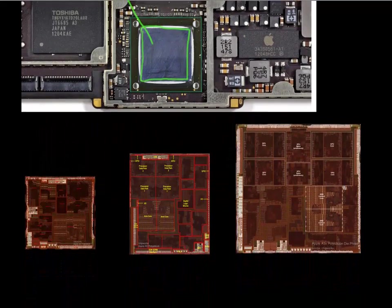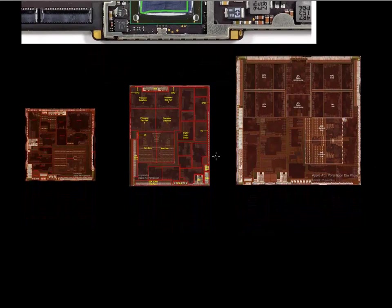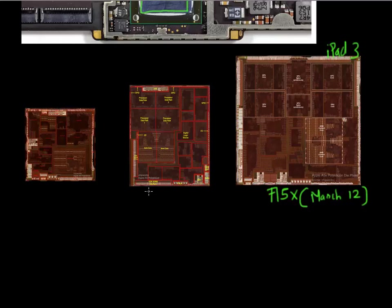And so if you take that apart and you flip the chip again, you see shown here is essentially the chip as it looks. This is the A5X chip, which was launched in March 2012 along with the product, the iPad 3. This is the A5 chip, which was launched in October of 2011, which powers the iPhone 4S. And this is the A4 chip, which was previous to that, which powers the iPad 2 or the iPhone 4.